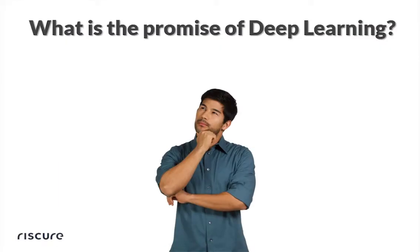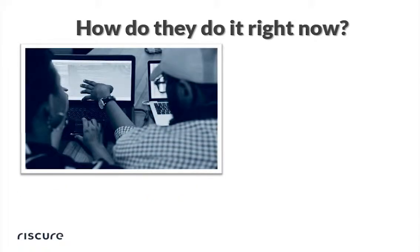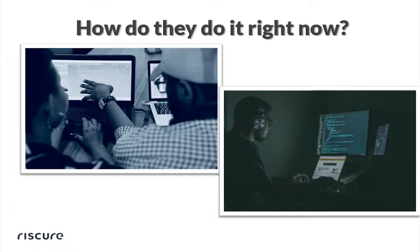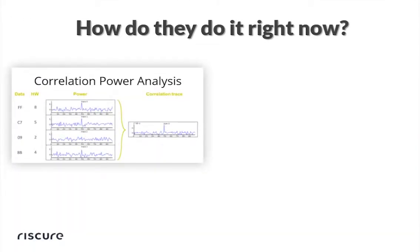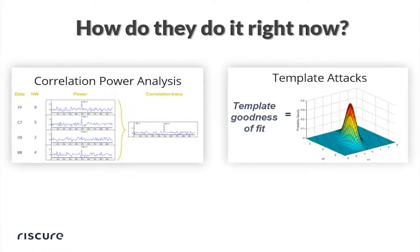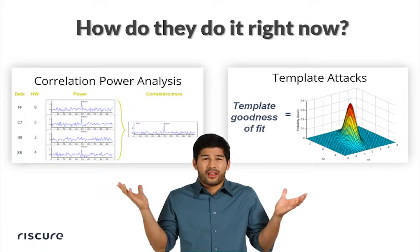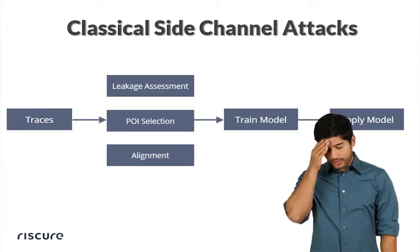But what is the promise of deep learning? Today, highly educated security analysts are evaluating the resilience of cryptographic implementations to side channel attacks, such as correlation power analysis or template attacks. These are complex attacks with many steps. Each step — from acquisition, leakage assessment, point of interest identification, alignment, and filtering — requires a lot of background knowledge.